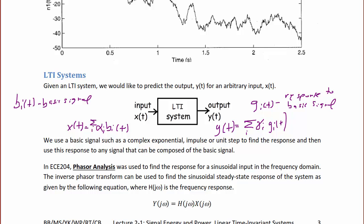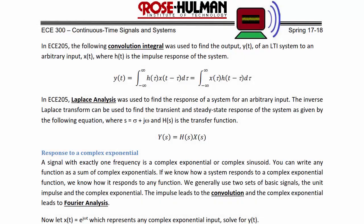The inverse phasor transform can be used to find the sinusoidal steady-state response of the system, where H(jω) is the frequency response. In the frequency domain the LTI system input and output becomes Y(jω) = H(jω) X(jω). In EC205, the convolution integral was used to find the output y(t) of an LTI system to an arbitrary input x(t), where h(t) is the impulse response of the system.